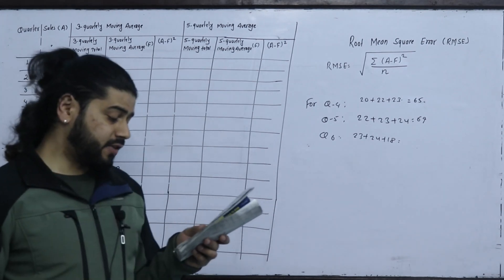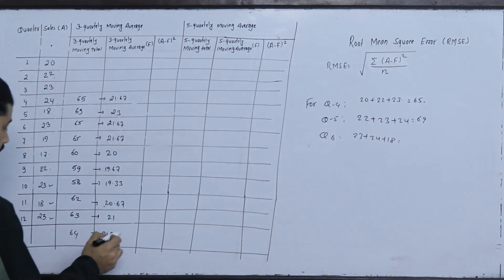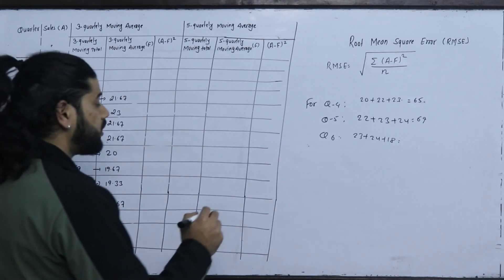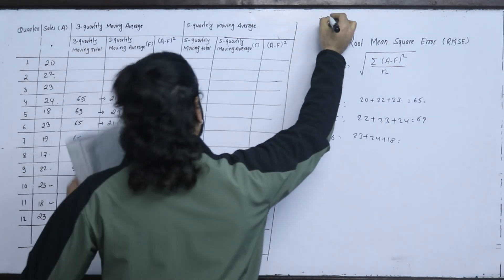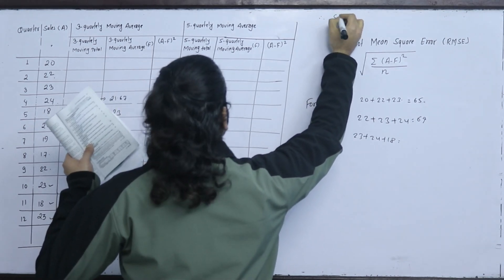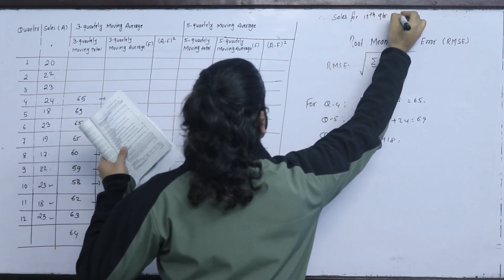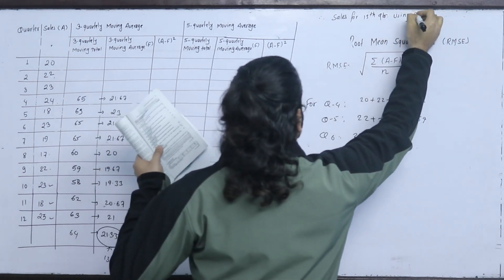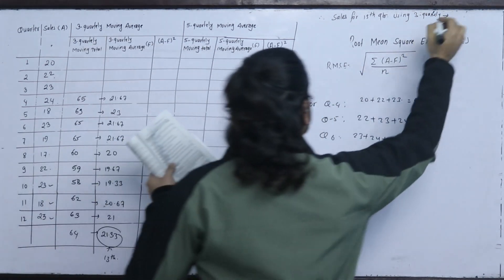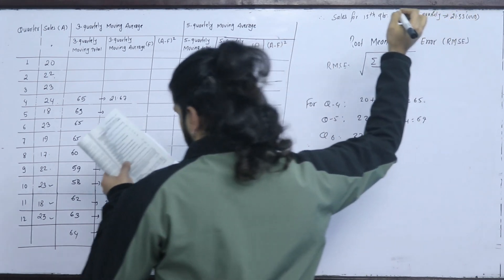Analyzing 3-quarterly and 5-quarterly moving average and forecast for the 13th quarter: the forecast for sales using the 3-quarterly moving average method gives 21.33 thousand units for the 13th quarter.